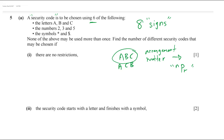Since there are eight different characters and we choose six, we just calculate 8P6, which gives 20,160.